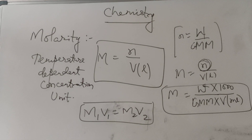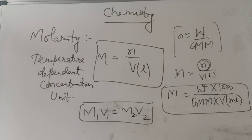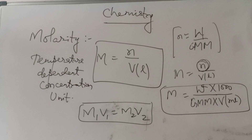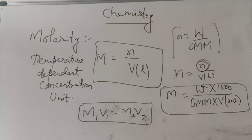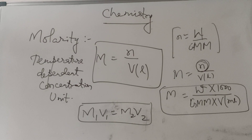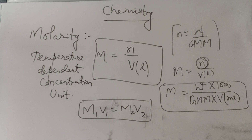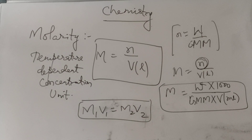Other units used to calculate the concentration of solute in a solution include normality and molality. For molality we use 1 kg of solvent. For normality we use the number of gram equivalents of solute dissolved in 1 liter of solution.